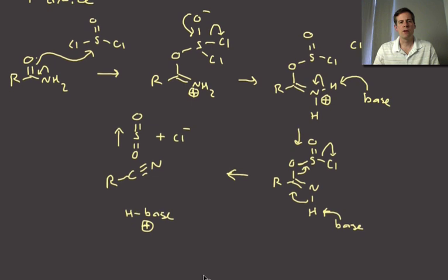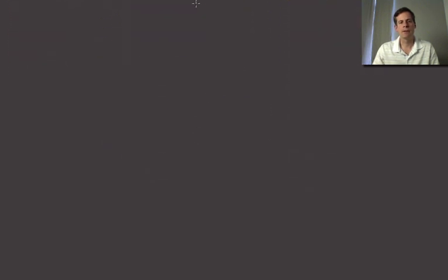So those are really the two major ways to make nitriles, for the most part, either substitution or dehydration. And just to kind of end this off, we just want to talk quickly about the reactions of nitriles, and you know, just so we understand why in the world we're making these things. And again, we've already talked about some of these.